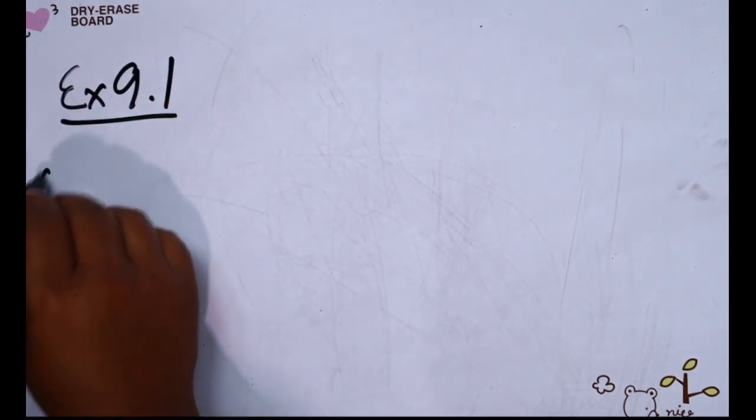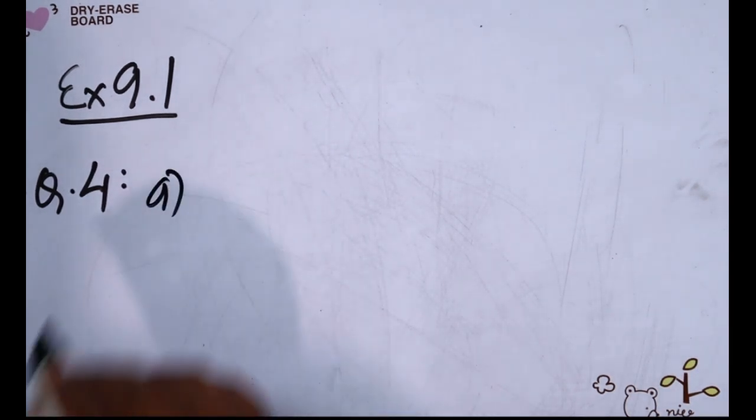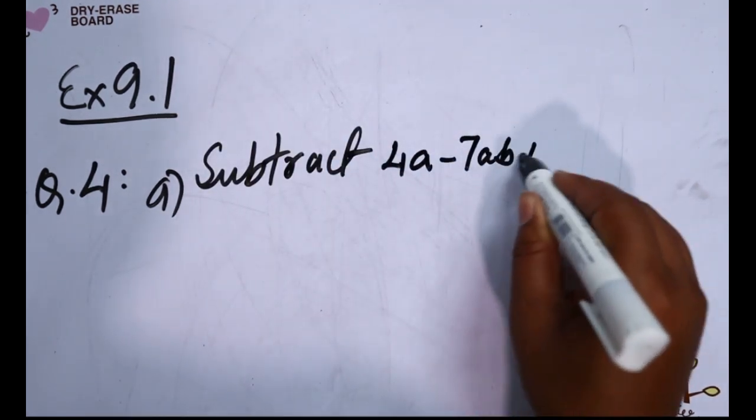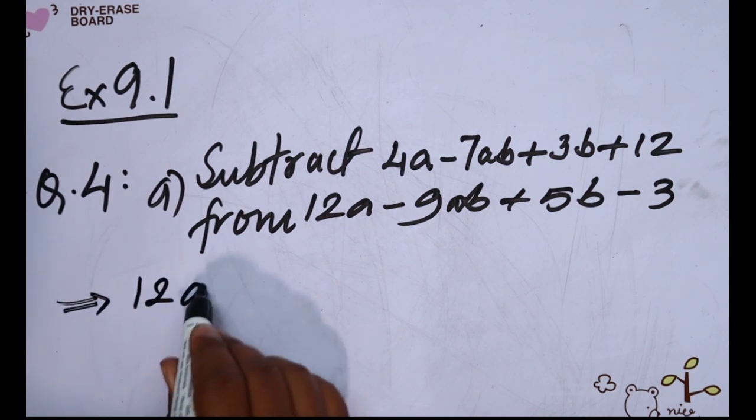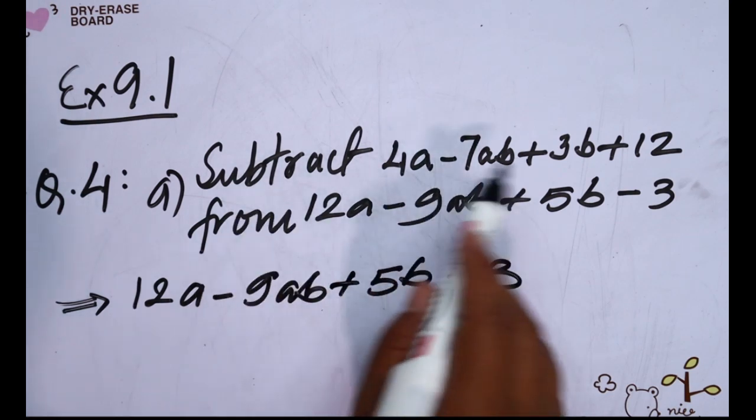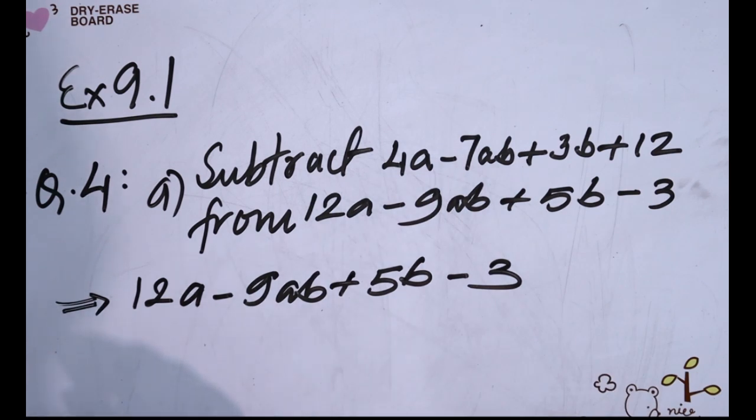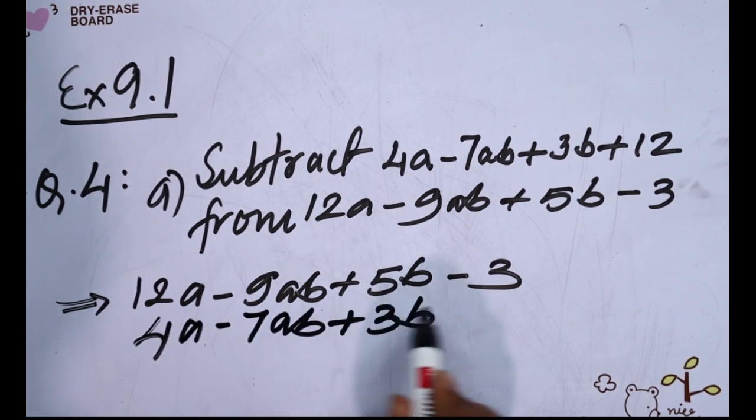Exercise 9.1 question number 4. Sub-number a, b, c. Number a: 12a minus 9ab plus 5b minus 3. Subtract: 4a minus 7ab plus 3b.